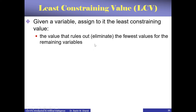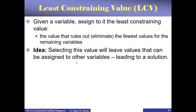The least constraining value heuristic says: given a variable, assign to it the value that rules out the fewest values for the remaining variables. This is somewhat contrary to MRV — MRV says choose a variable with the minimum remaining values, but having chosen that variable, when you assign a value you actually want to allow maximum flexibility to the neighboring variables.